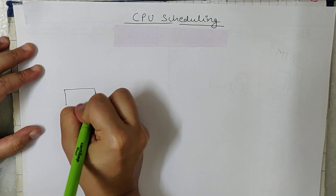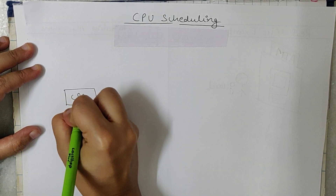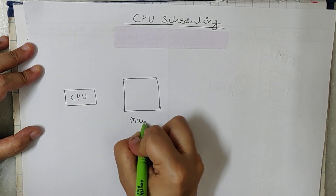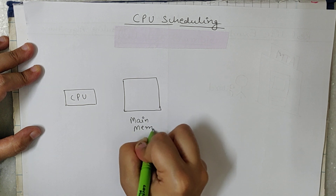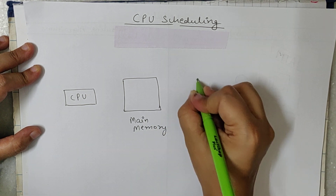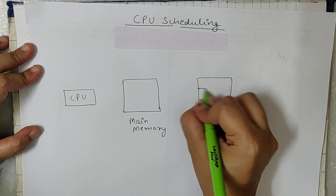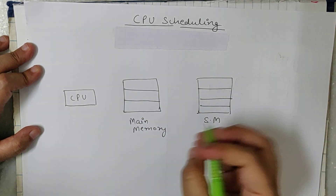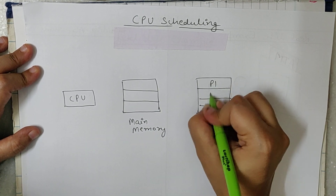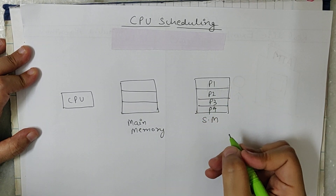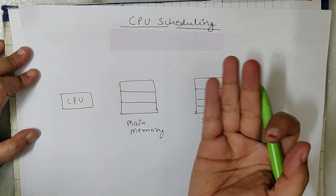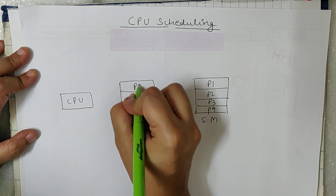Let's understand with an example. Suppose this is a CPU, here is the main memory, and here is the secondary memory. Suppose I have programs P1, P2, P3, P4 and so on in secondary memory, and I want to execute P1, P2, P3. So they have to reside in the main memory for execution.